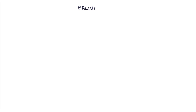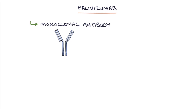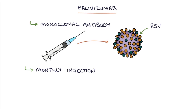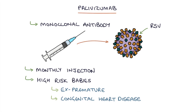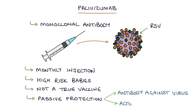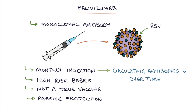Palivizumab is a monoclonal antibody that targets respiratory syncytial virus. A monthly injection is given as prevention against bronchiolitis caused by RSV and is given to high risk babies such as ex-premature babies and those with congenital heart disease. Palivizumab is not a true vaccine as it does not stimulate the infant's immune system. Instead, it provides passive protection by circulating in the body until the virus is encountered, at which point it acts as an antibody activating the immune system to fight off the virus. The antibody levels decrease over time, which is why a monthly injection is required.